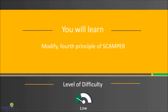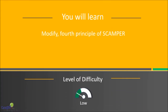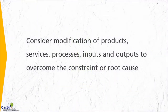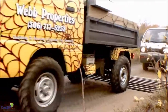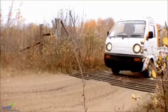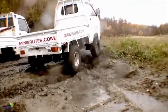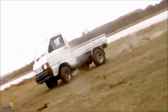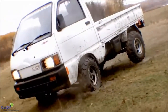The letter M in SCAMPER stands for Modify, Magnify, or Minimize. In this principle, we consider modification of products, services, processes, inputs, and outputs to overcome the constraints or the root cause. This is a specific example of minimizing the size of a truck — one of the simplest examples of modification. Usually, a truck is designed to carry large loads of material.